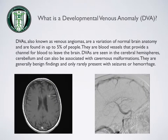What is a Developmental Venous Anomaly, or DVA? DVAs, also known as venous angiomas, are a variation of normal brain anatomy and are found in up to 5% of people. They're blood vessels that provide a channel for blood to leave the brain. DVAs are seen in the cerebral hemispheres and cerebellum, and can be associated with cavernous malformations. They're generally benign findings and only rarely present with seizures or hemorrhage.